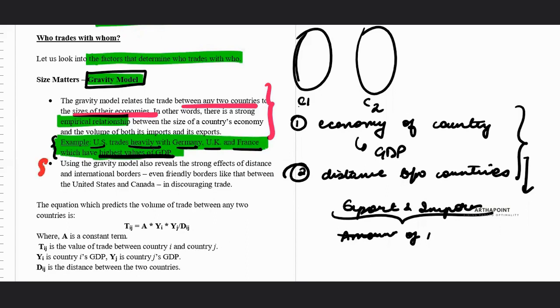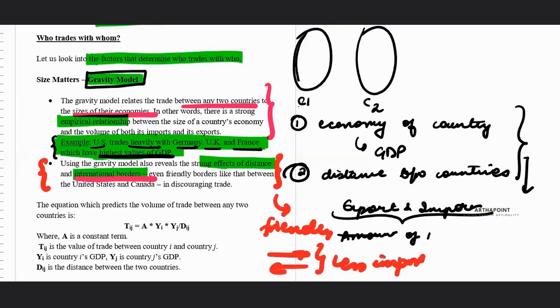Using the same gravity model, it is also seen that there is some relationship between the distance and the trade, and the borders also, international borders. So those countries which have friendly international borders, which allow easy movement of goods and services, where there are less import quotas, where there are less tariffs, these are the countries where good amount of trade takes place as compared to other countries.